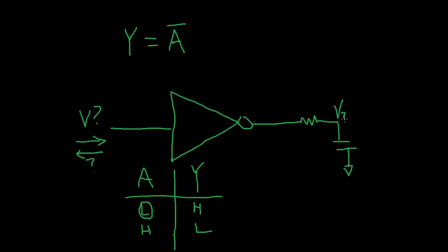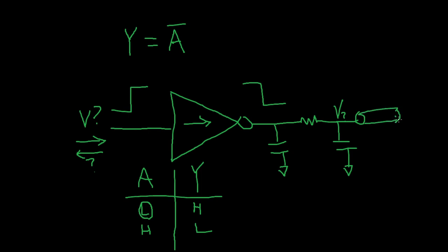What's the voltage at the output? When the input has a switching event, what exactly happens at the output? How long of a delay is there inside of this device? Will the output capacitance affect that? If you add a transmission line onto the end of here, is that going to affect how this device works? There are a lot of questions that can come up, and my goal is to try to simplify these and give you a basic understanding of exactly how this device works.